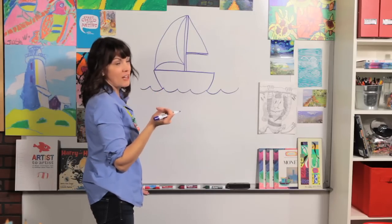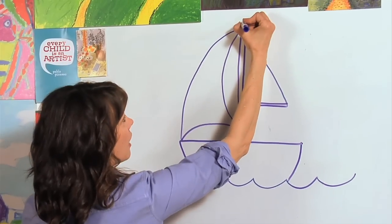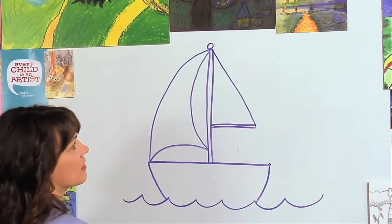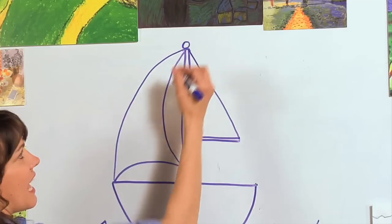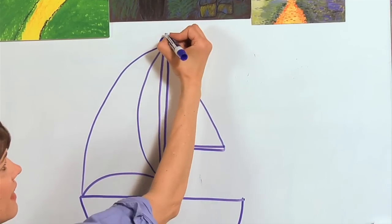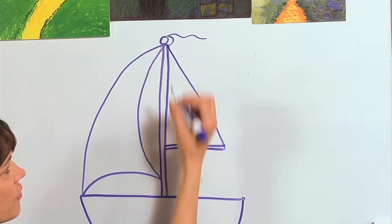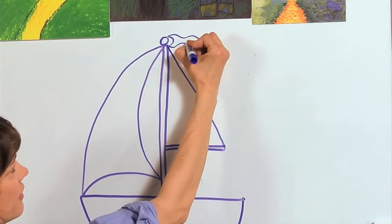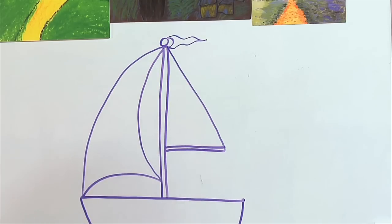Now I always picture a flag on the top of the boat. So let's draw a little flag. I'm just going to draw a circle here, kind of at the top of our mast. And I'm going to draw a curved line and then a flag with curvy lines like this and curvy lines that meet right at the tip.